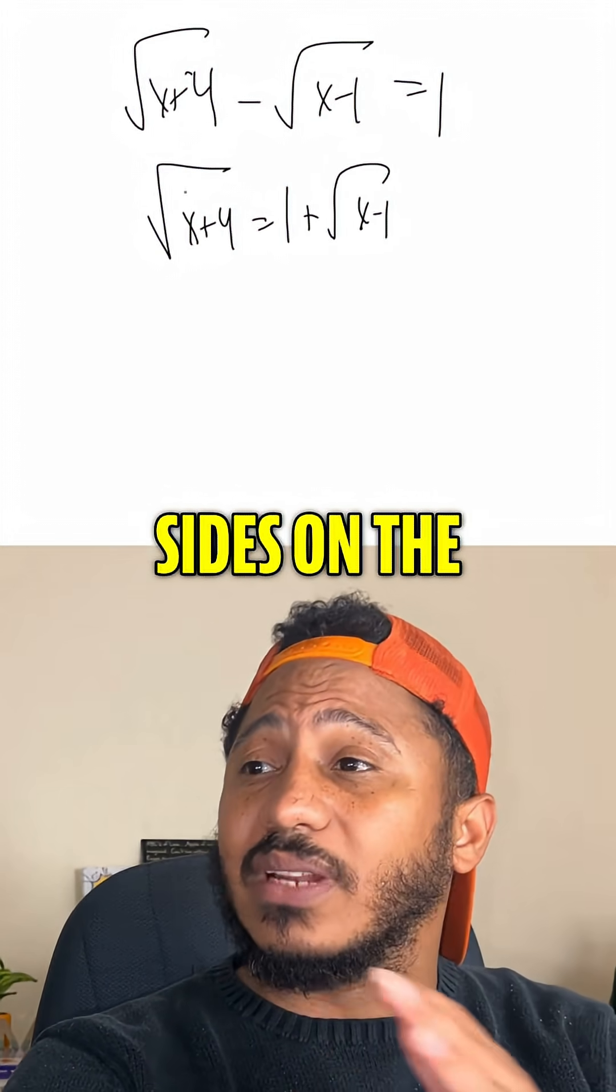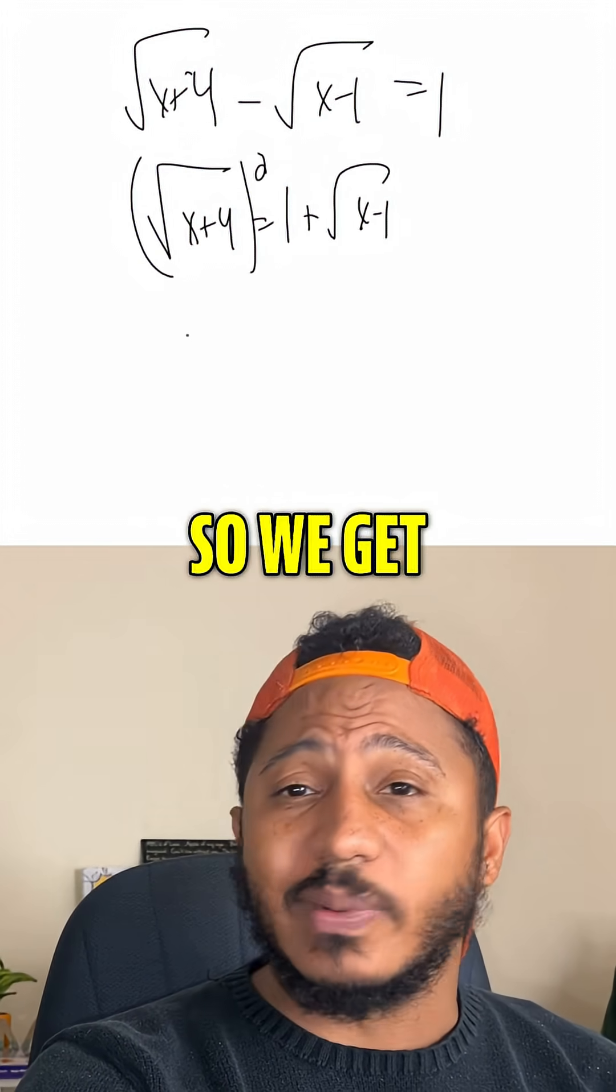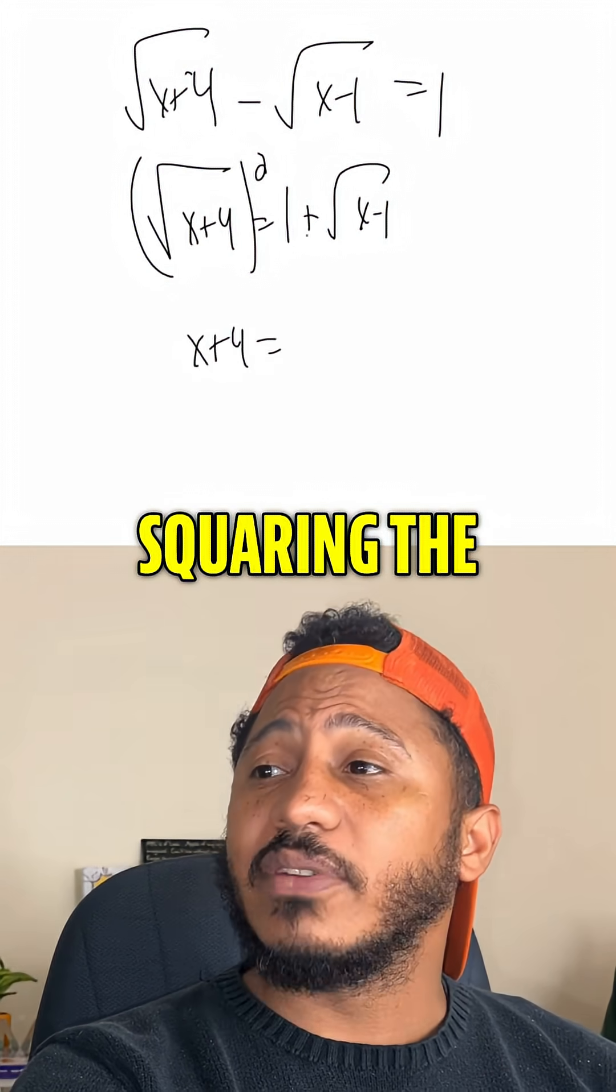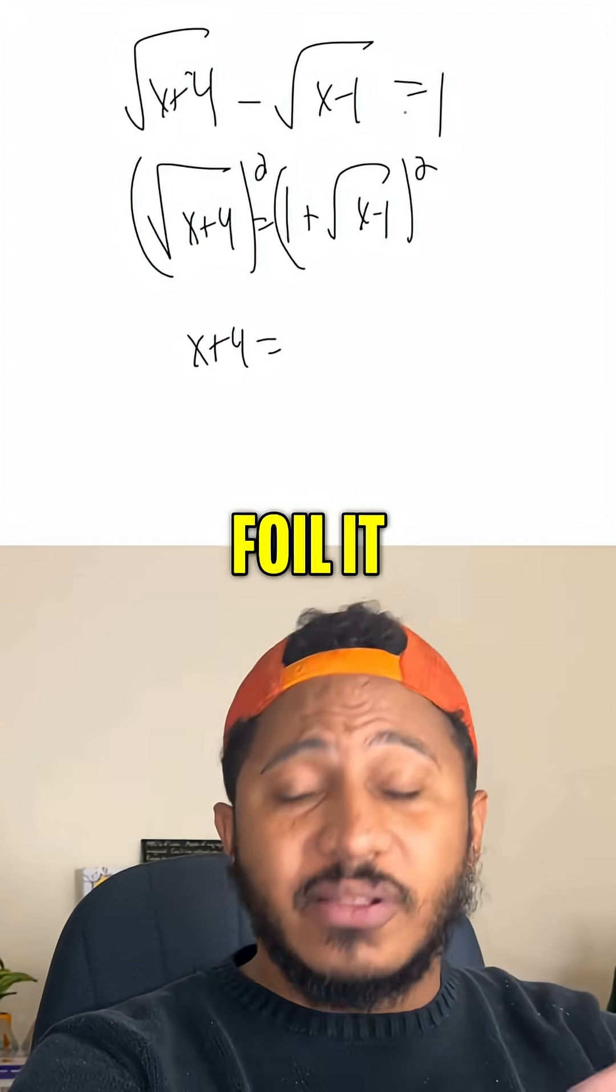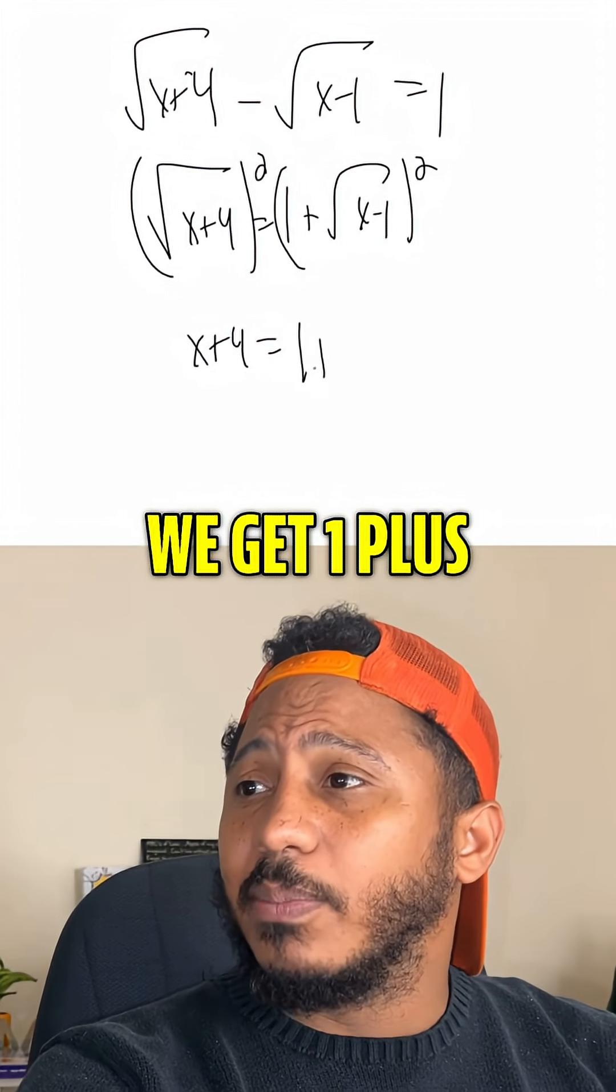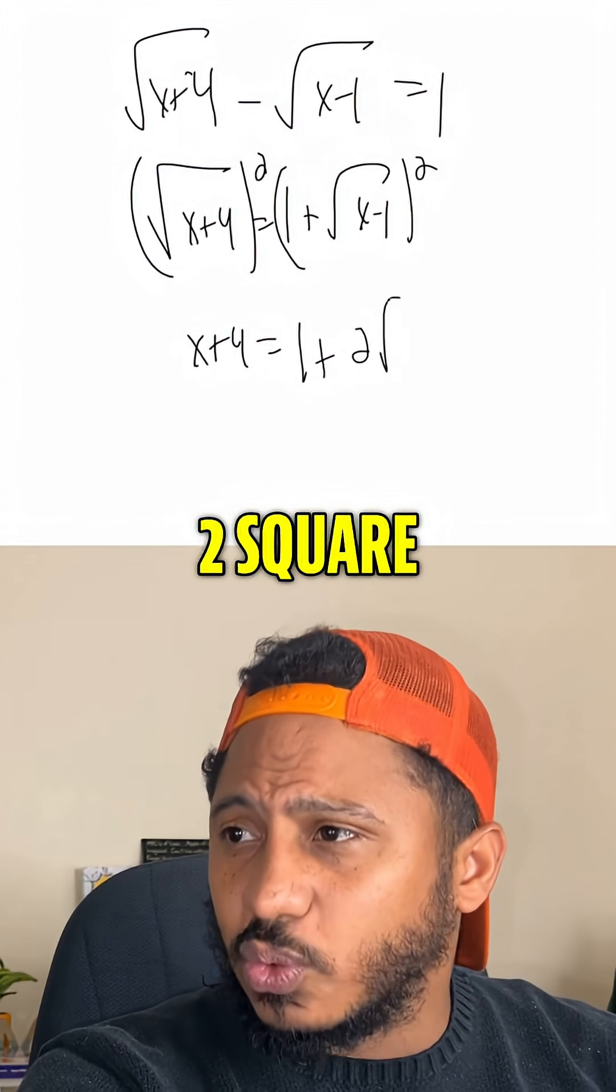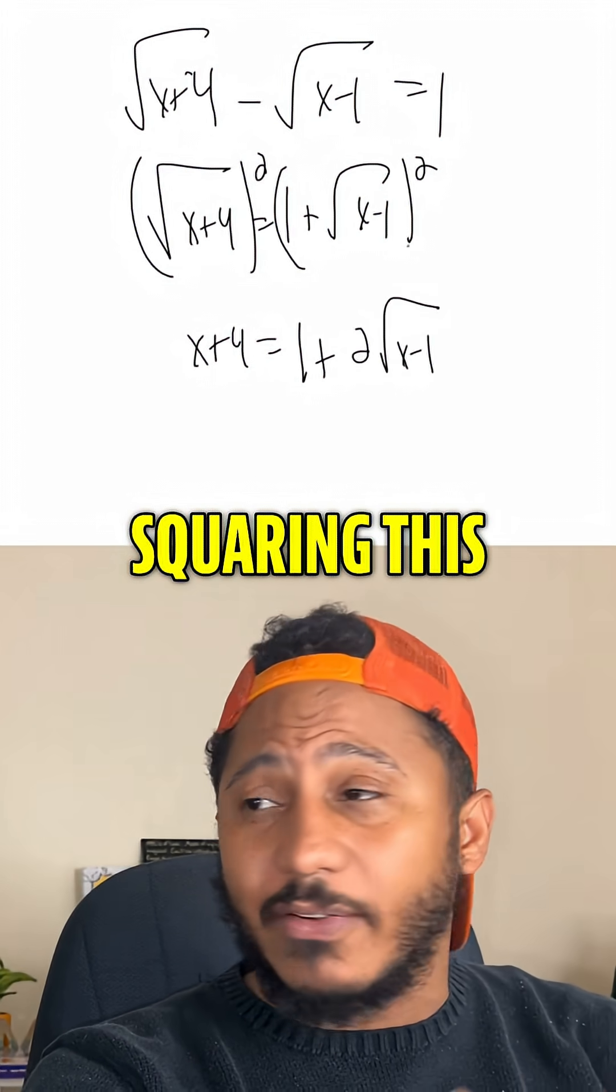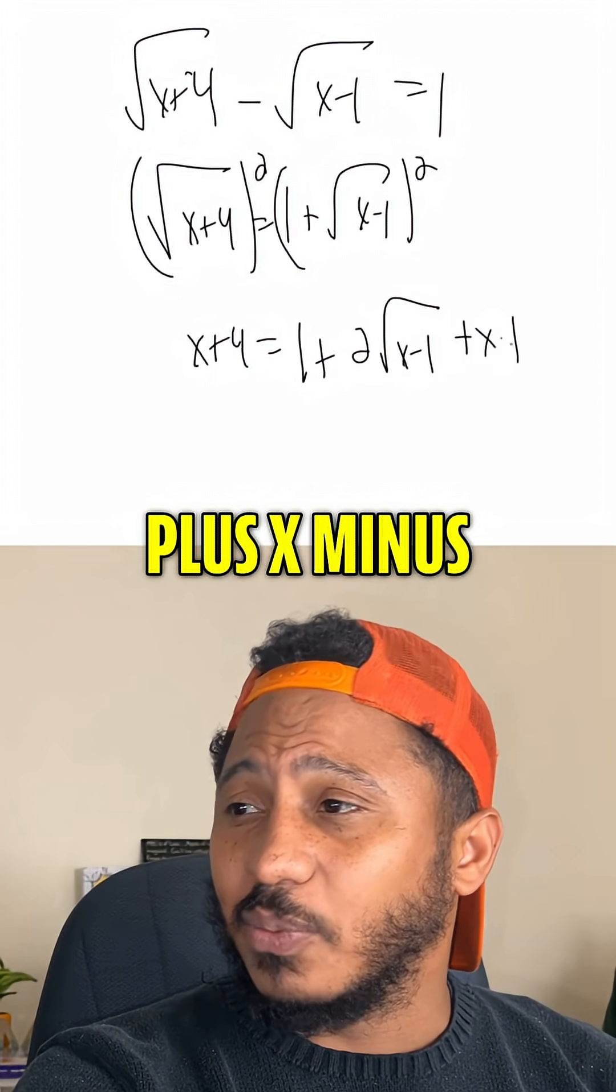And now, squaring both sides on the left-hand side, this is the square of the radical, so we get just x plus 4. Squaring the right-hand side, though, we have to actually foil this out. I multiply this out. If I square this right-hand side, we get 1 plus, this becomes 2 square roots of x minus 1, and then squaring this square root gives us plus x minus 1.